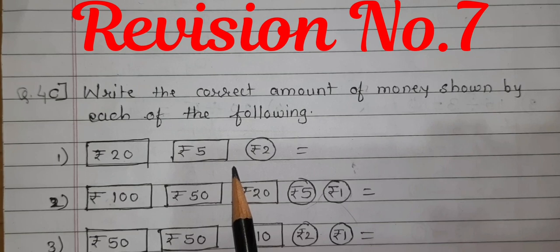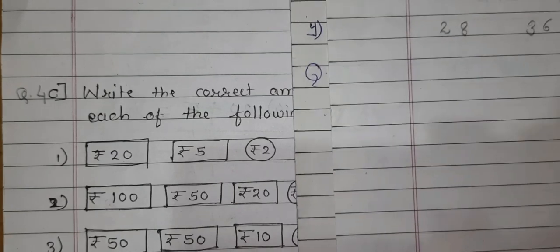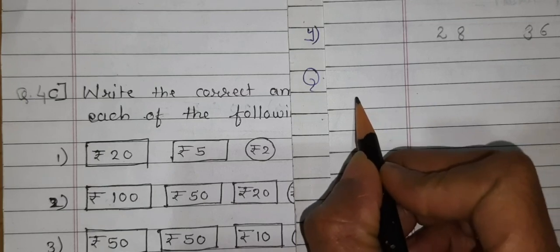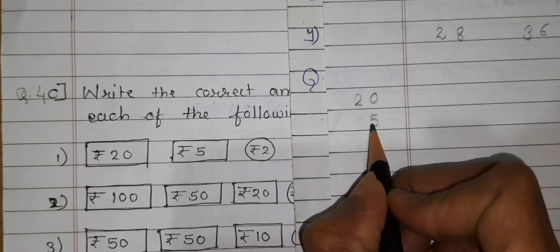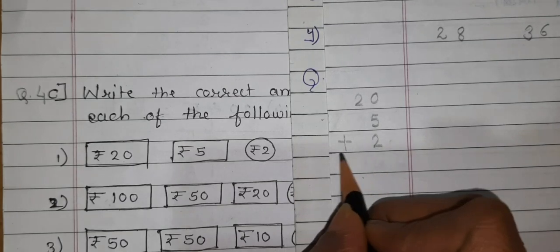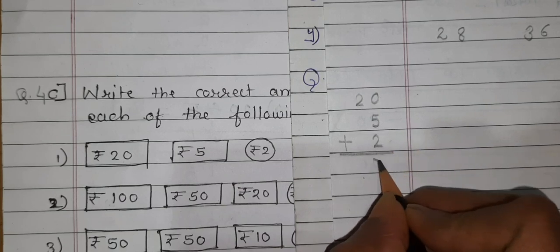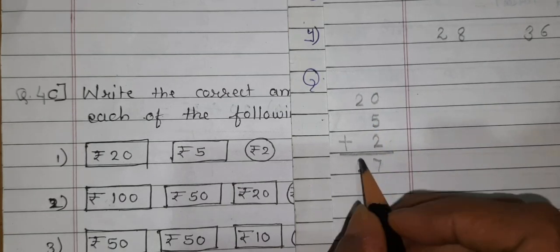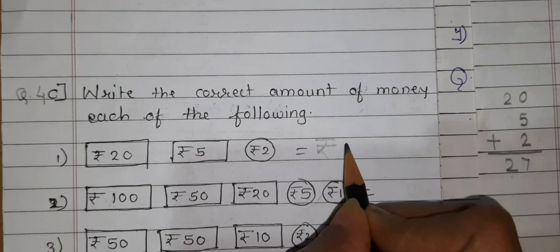Question number 1: Rupees 20, Rupees 5 and Rupees 2. We are going to write it on a separate paper. Write 20, then single digit 5 under the ones column, and single digit 2 below that. Now we add: 0 plus 5 is 5, 5 plus 2 is 7, and the 2 in the tens column comes as it is. So our answer is Rupees 27.